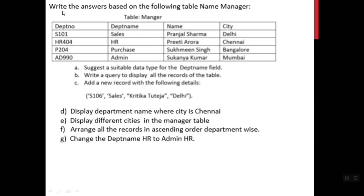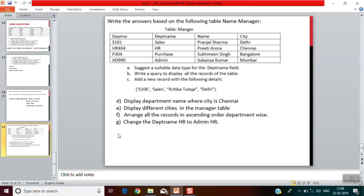Now write the answer based on the following manager table, which has four columns: department number, department name, name, and city. The first question asks us to suggest a suitable data type for the department name field. Since department name consists of text, the data type can be either CHAR or VARCHAR, for example VARCHAR(50) or CHAR(50).